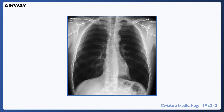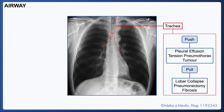When you're actually analyzing the chest x-ray, the first thing you look at are the airways — the trachea and the bronchi. The trachea should be located in the midline between the two lungs. If it appears displaced, consider the forces that may be at play. Pathology that can push the trachea away from the affected side includes pleural effusions, tension pneumothorax, and tumors. Whereas conditions that can pull the trachea include lobar collapse, pneumonectomy, and fibrosis.